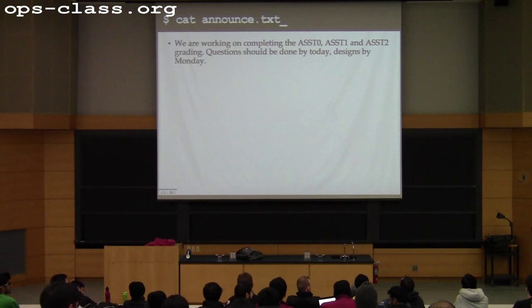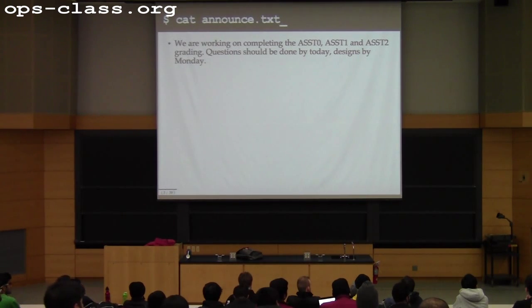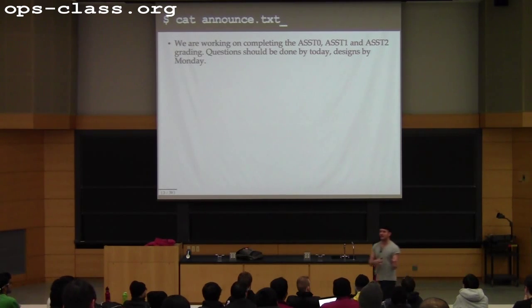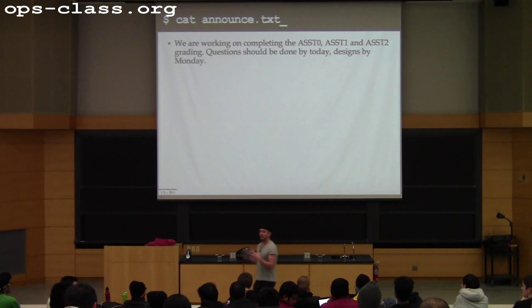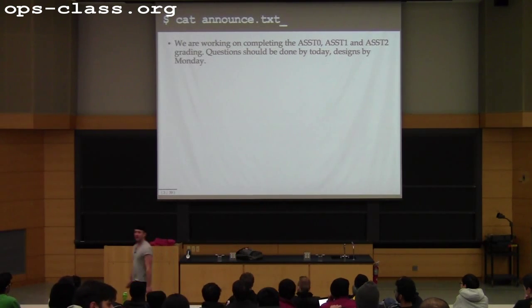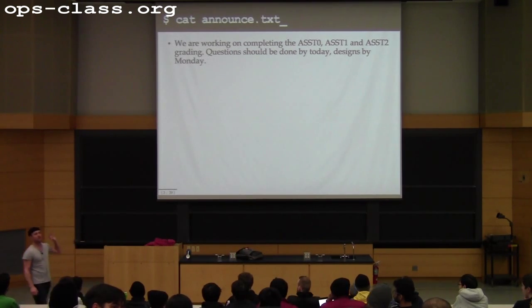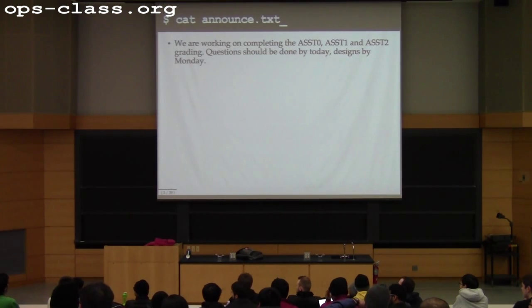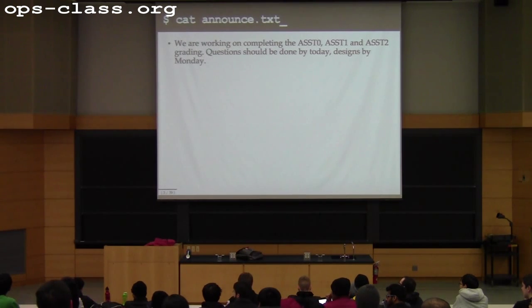The grading for assignments zero through two — the code reading questions — should hopefully be done today. We front-loaded a lot of this, so this is like three quarters of the human grading the TAs do all semester, and we're trying to get it done pretty early. A lot of the questions are finished. We're wrapping up the code reading questions. The design should be done on Monday — those obviously take a little bit longer.